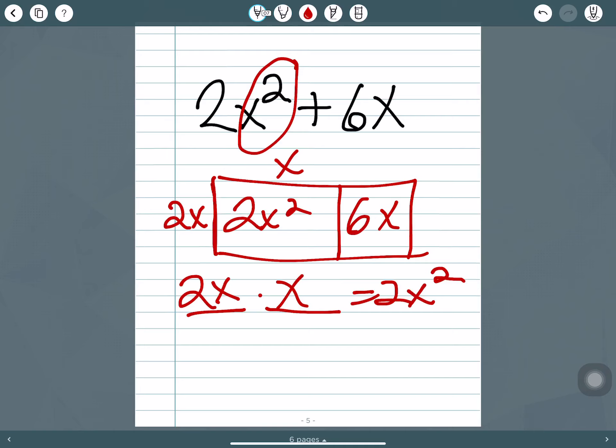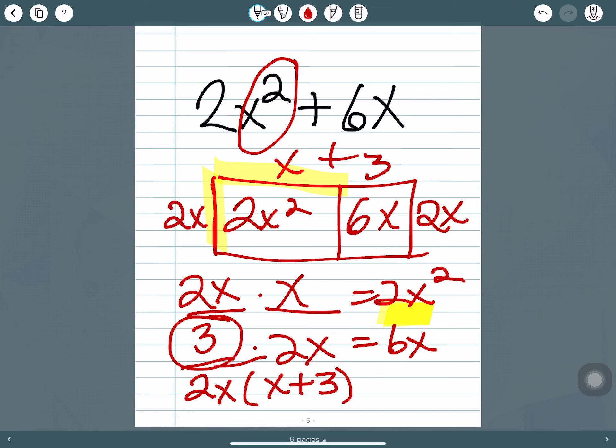So one side of this rectangle is 2x. The other side is x, because 2x times x would give me 2x squared. So we know that this side is 2x, so what times 2x would give me 6x? 3. So the width is x plus 3, and that is the final solution.